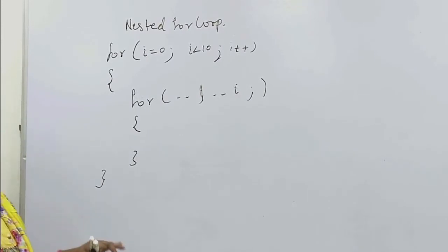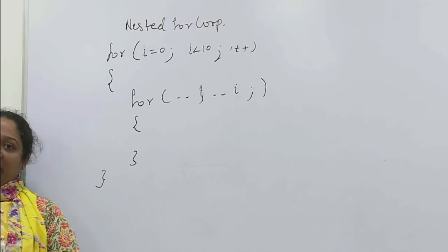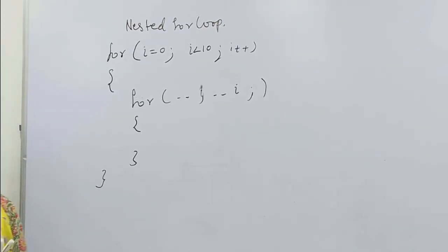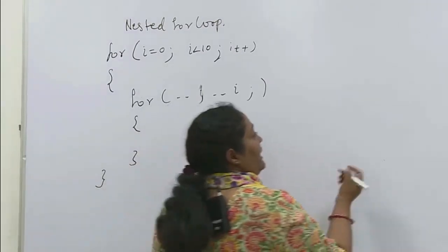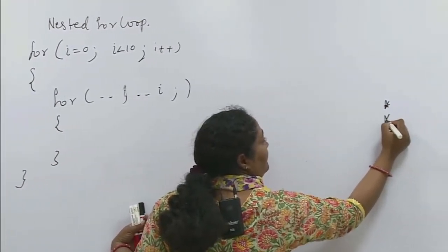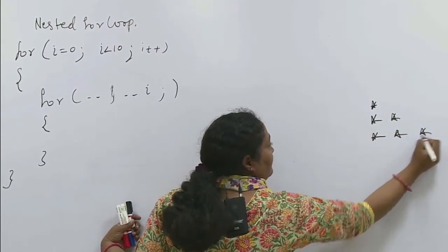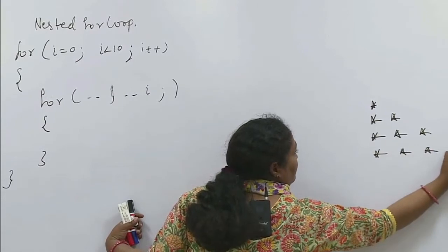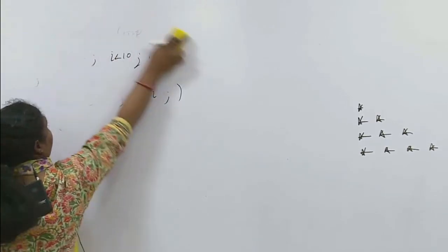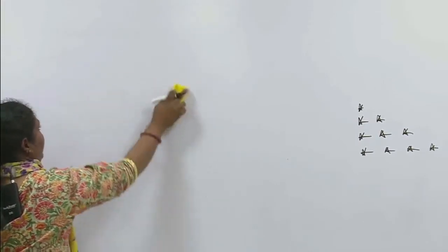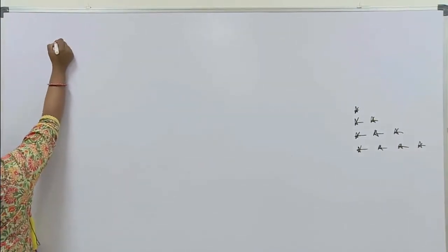Ab ye kaha kaam aata hai? Ab apan bana dete hain ek chota sa program, uske baad apan dekhenge ki ye kaise kaam aata hai. Apna jo program hai, apna program ke mein ek pattern de rahi hoon. The pattern we have to print. What is the pattern? The pattern is this - star, star star, star star star, star star star star.